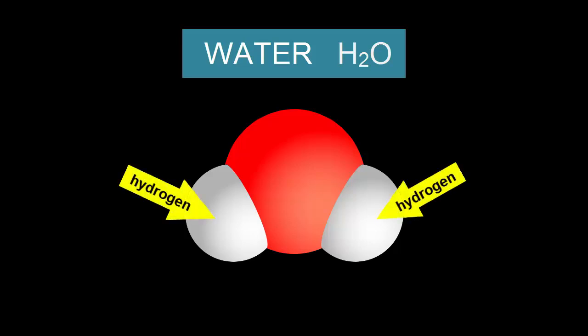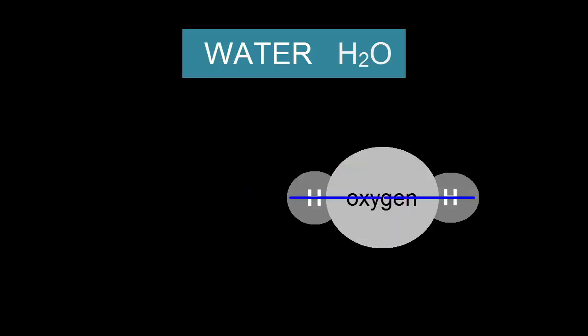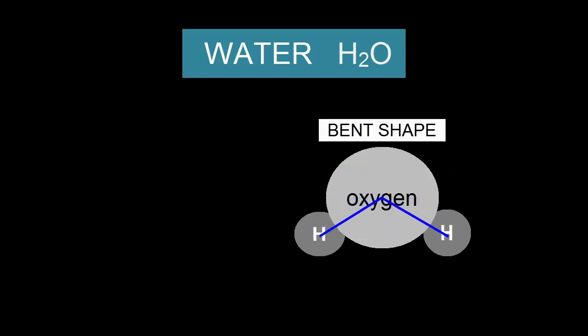Two hydrogens, each bonded to a central oxygen, hence the chemical formula H2O. Notice that in this model of a water molecule, the shape is bent. Why?